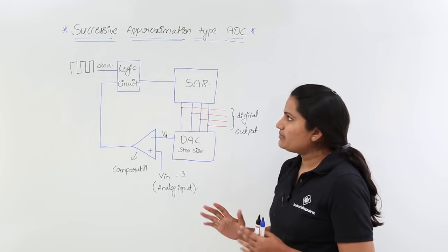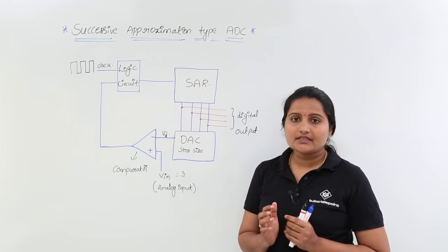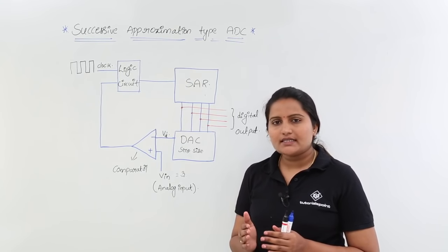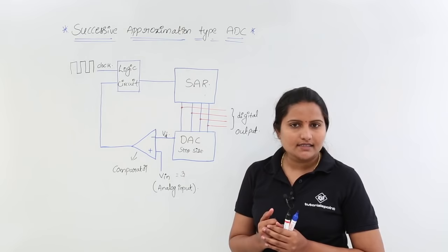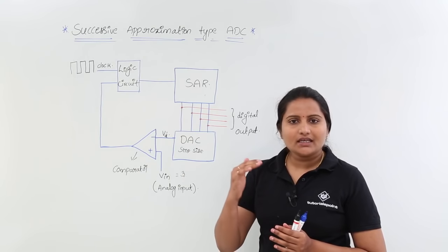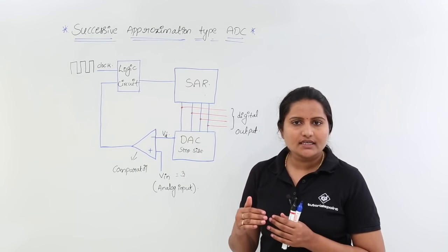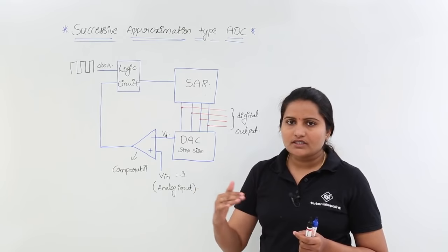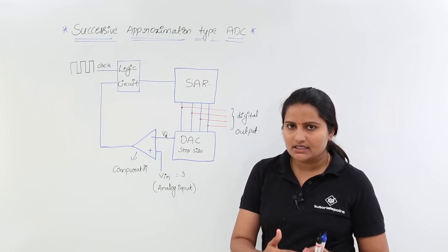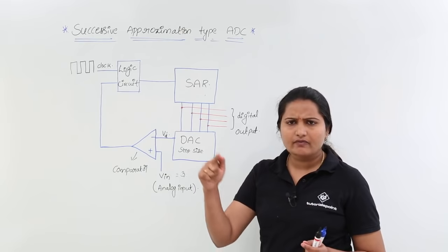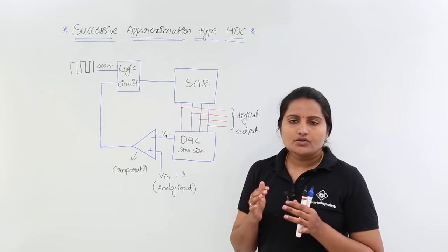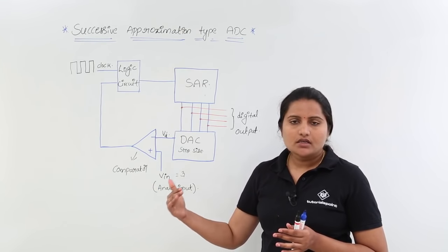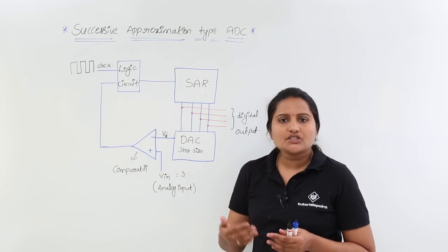This is very similar to counter type, but we are having some disadvantages in counter type ADC. Counter type ADC takes 2 power n minus 1 clock cycles — after counting each voltage level it goes to reset and starts counting from the initial itself. For example, if it counted 5 and wants to count 6, it starts again from 1, 2, 3, 4, 5, 6. So to count n bits it takes nearly 2 power n minus 1 cycles, which is why it takes much delay.